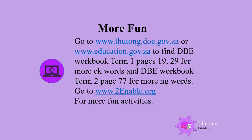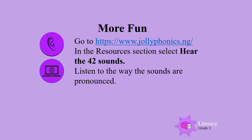You can also go to the DBE website. Find the DBE workbook term one, pages nineteen and twenty-nine, for more words. Also go to the workbook term two, page seventy-seven, for more ng words. You can also go to www.2enable.org for more fun activities. For more fun, go to the Jolly Phonics website, and in the resources section select 'Hear the 42 sounds' to listen to the way the sounds are pronounced.